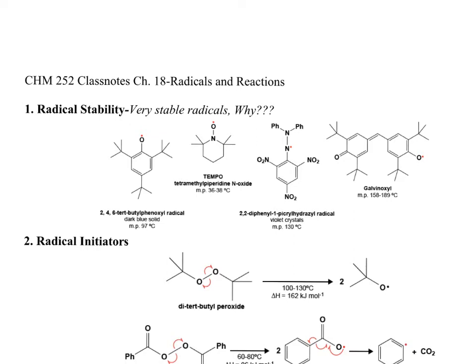Radicals, because they're electron deficient - you see this O dot there and O dot there, all of these N dot, O dot - they can do resonance. Radicals, just like carbocations, can be stabilized by hyperconjugation, pi bond resonance, and lone pair resonance. We'll work on how that resonance works with fishhook arrows later, but it's resonance nonetheless. Anytime you have resonance, that can lower your energy and make you more stable.